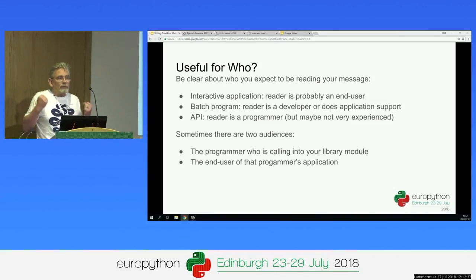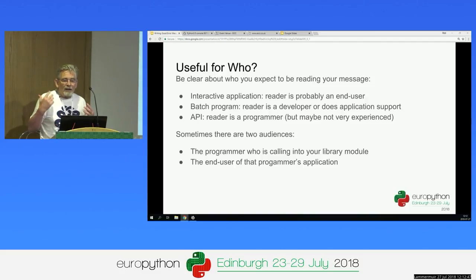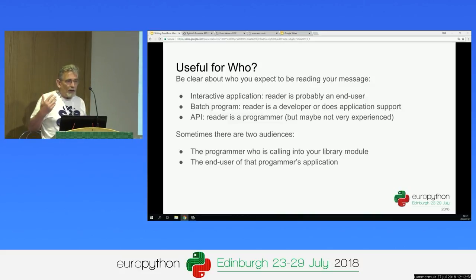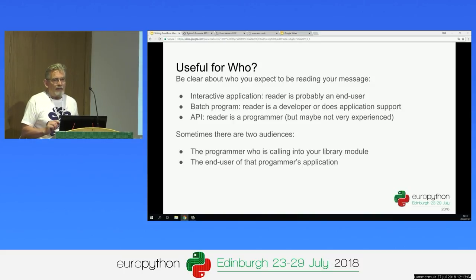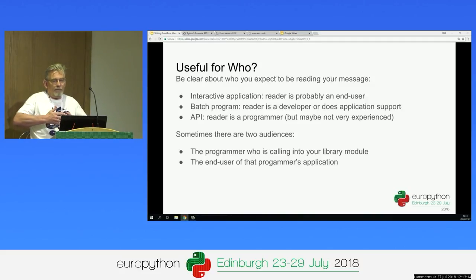So the first question is: useful for whom? This is just another way of saying that as a writer, to get through to your reader, you have to know who your audience is. If it's an interactive application, then your audience is probably an end user. If it's a batch program, then your error message is being written to a log, so that's going to be a support person or a programmer. And if you're writing a library or an API, then your audience is a programmer, and you have to speak to that programmer as a programmer.